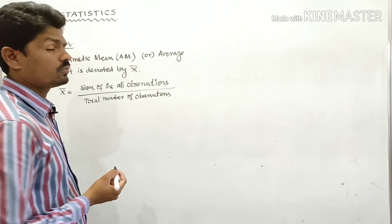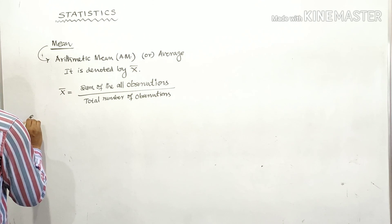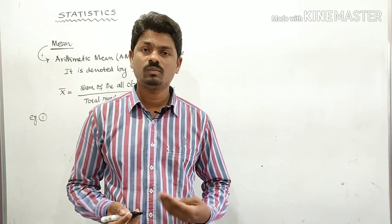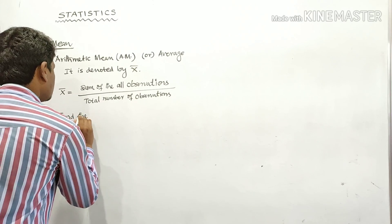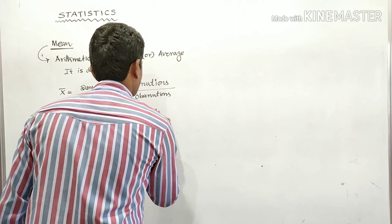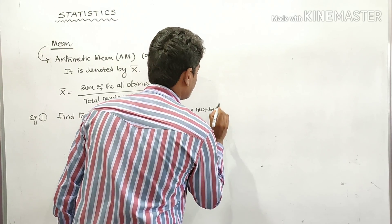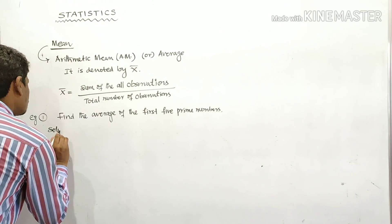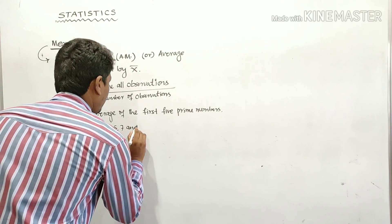These types of questions are very important in examinations. Example one: Find the mean of the first five prime numbers. The first five prime numbers are 2, 3, 5, 7, and 11.